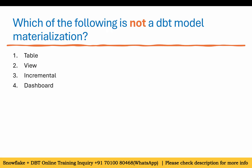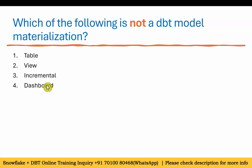Which of the following is NOT a DBT model materialization? Options are table, view, incremental, and dashboard. Table is a DBT materialization, view is a materialization, incremental is also a materialization — but dashboard is not a DBT model materialization. The answer is four: dashboard.